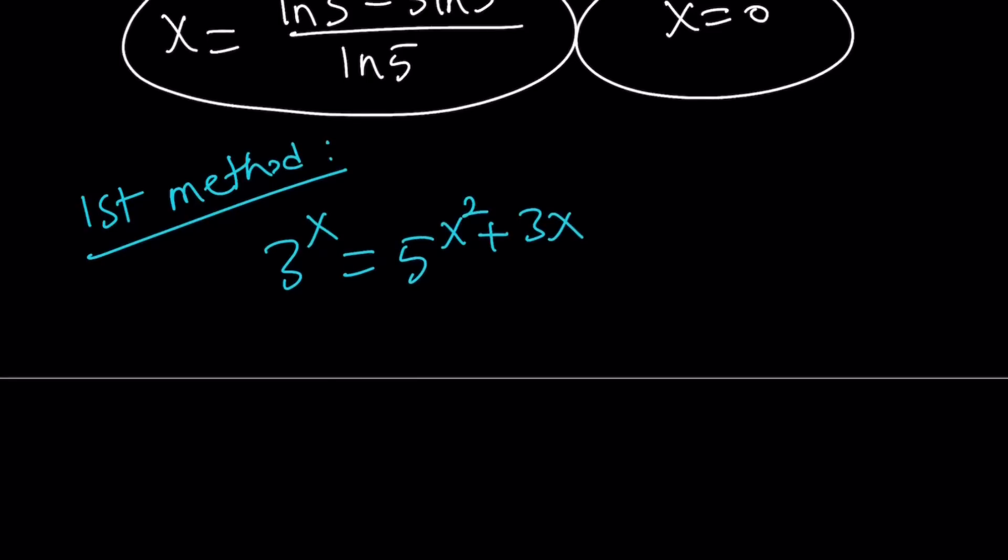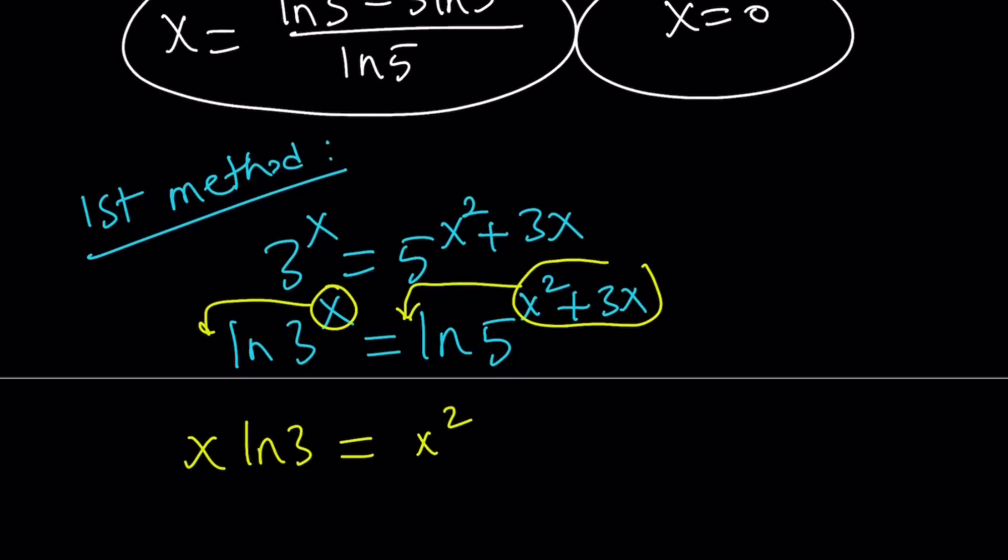Now, instead of trying to break down the x, I can just ln both sides directly. Whenever you have a variable or variables in the exponent, ln-ing or logging both sides is always a good idea. Almost always. So, let's just ln both sides. And then, let's move the powers. We can go ahead and move these to the front using power properties. This gives us x·ln3 = (x² + 3x)·ln5.